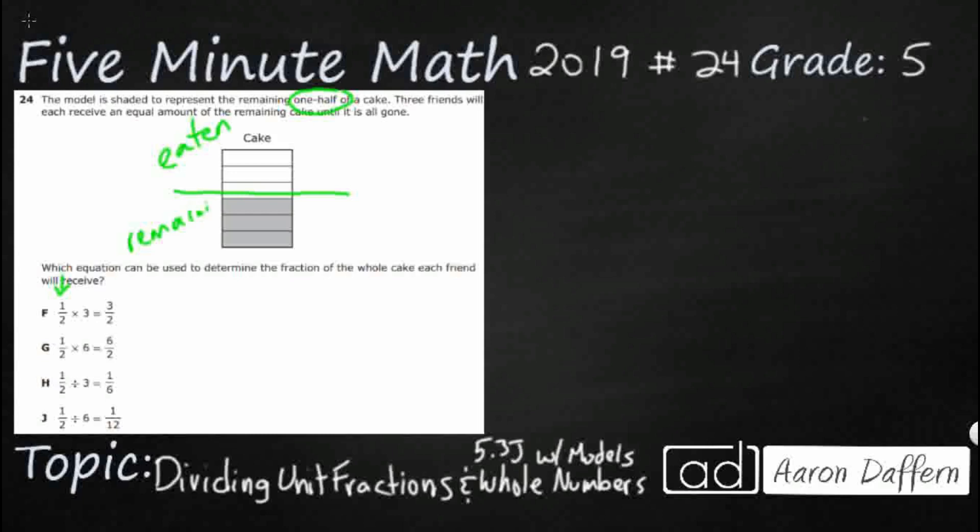So, they have a strange rectangular cake here, and then you've got three friends. Let's draw our three friends here. They are going to receive an equal amount, very important, of the remaining cake until it is all gone. So, they are going to use the rest of it, and each of them are going to get an equal amount.